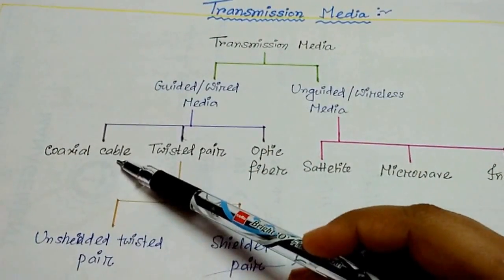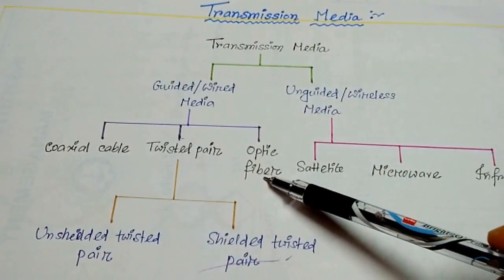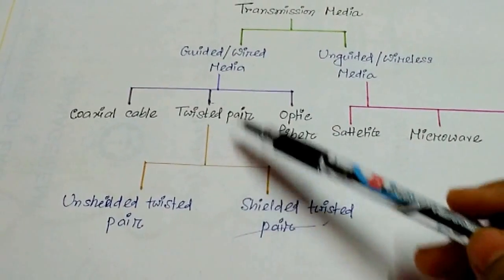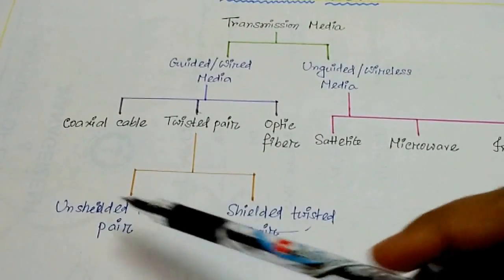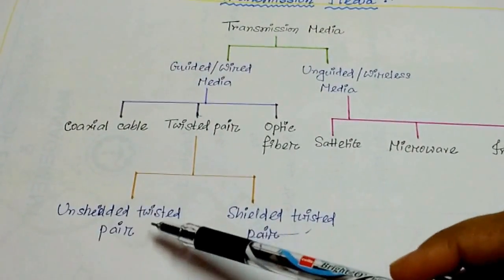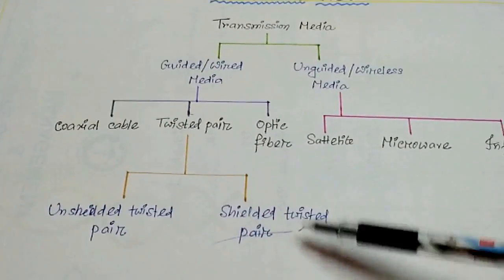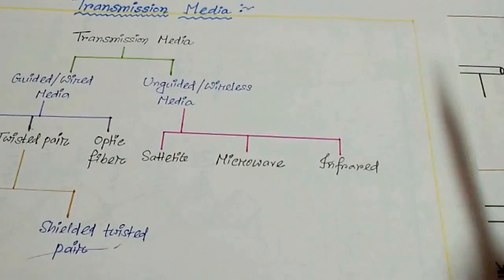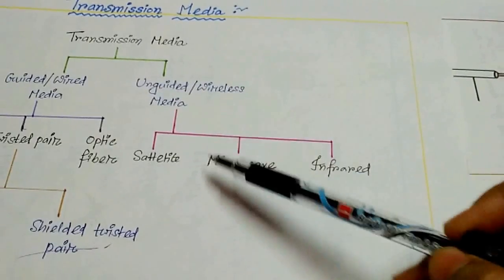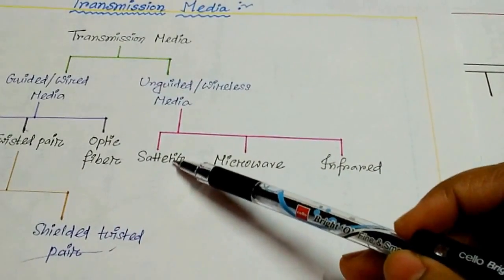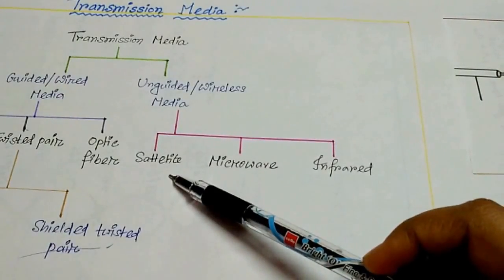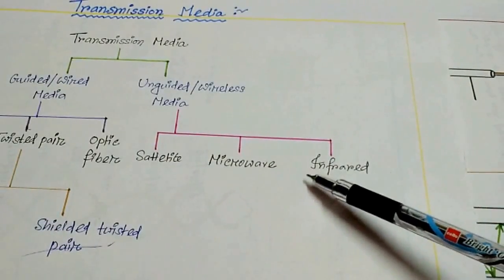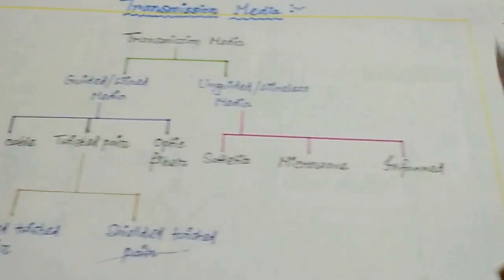The guided and wired media is divided into three types: coaxial cable, twisted pair, and optical fiber. The twisted pair also has two types: shielded twisted pair and unshielded twisted pair. And here comes the wireless media. Wireless media has three types: satellite, microwave, and infrared.